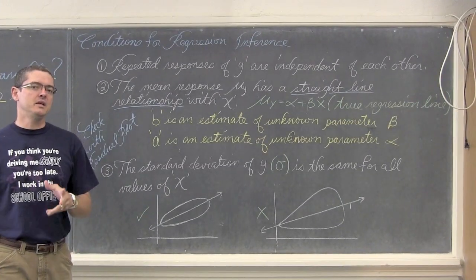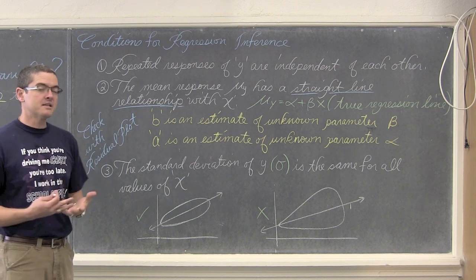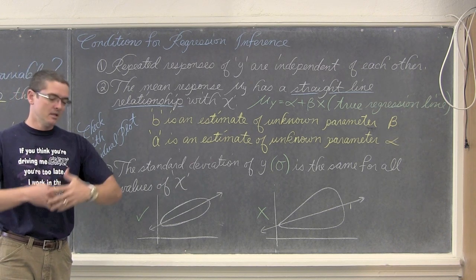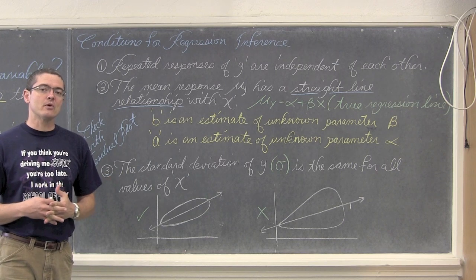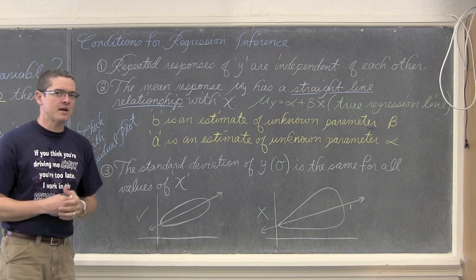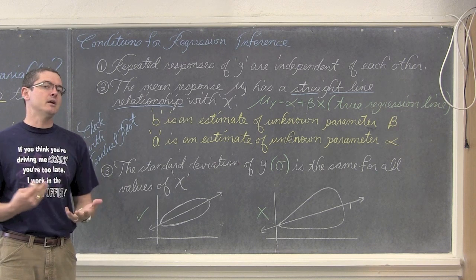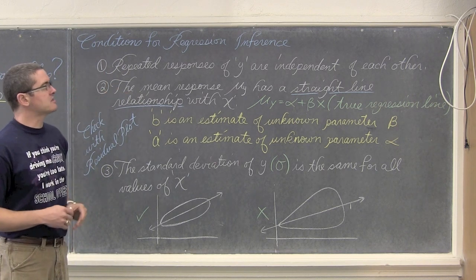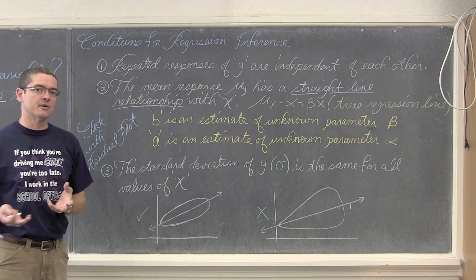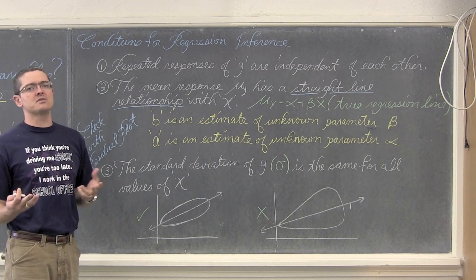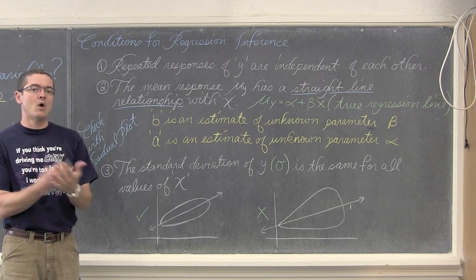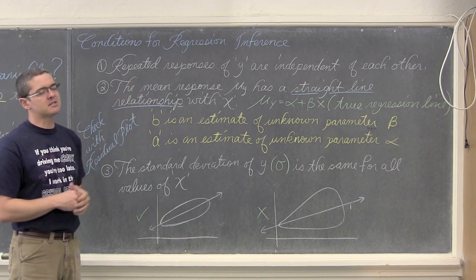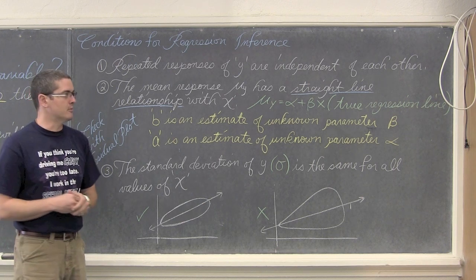We have four checks that we need to validate for doing linear regression t-tests or making confidence intervals for the slope of the regression line. Some of them are easier to check than others. Sometimes we just need to state that we know they exist. First, repeated responses of y are independent of each other. We have always needed independence with all of our significance tests. It is the y values we are predicting, so we only need independence in those y variables.